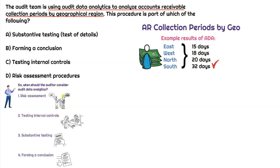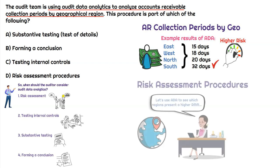If we look at south, they're at 32 days, and east, west, and north range between 15 and 20 days. So south by itself does seem to stand out, and it could present a higher risk. What this analysis is really telling us is where the higher risk would be — it's saying the south seems to have a higher risk of material misstatement based on that collection period.